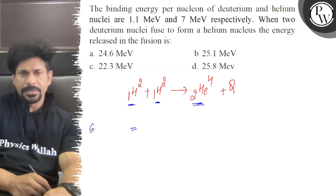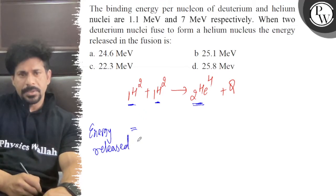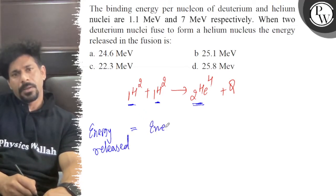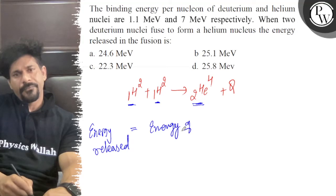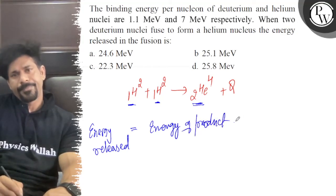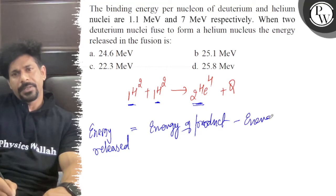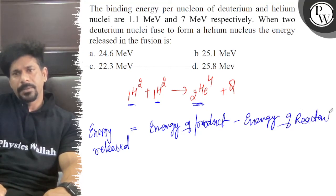So energy released is given by energy of product minus energy of reactant, energy of reactant, right?